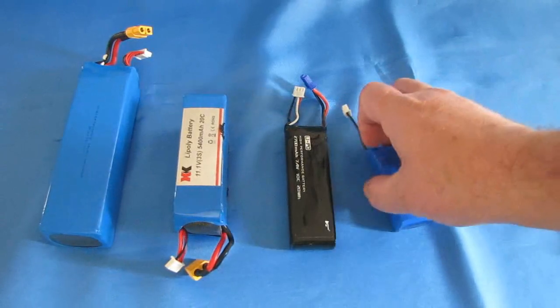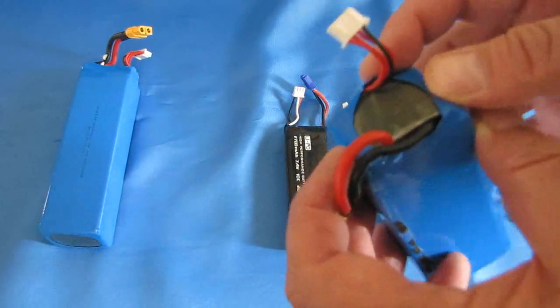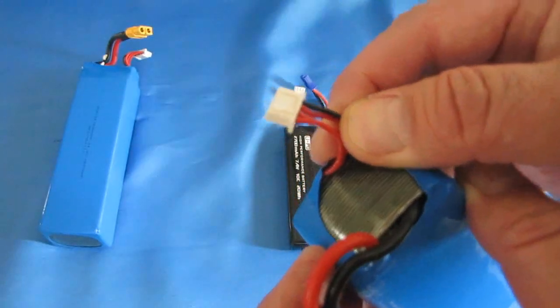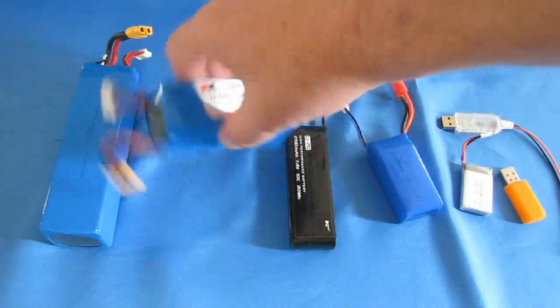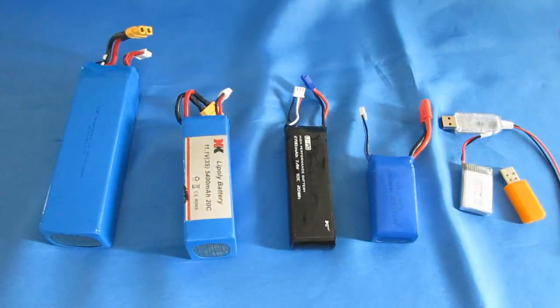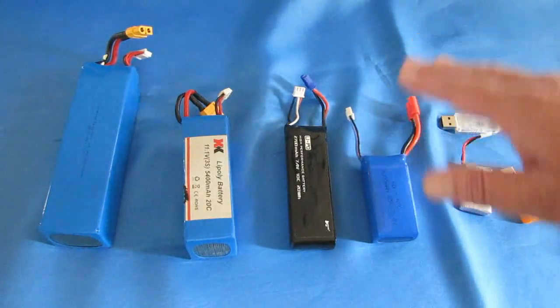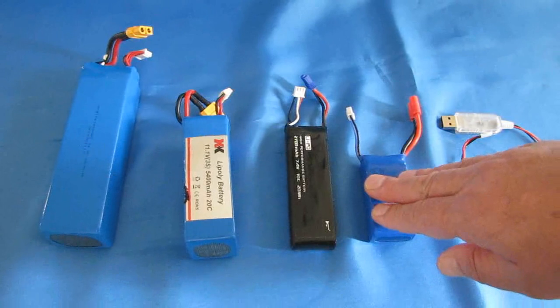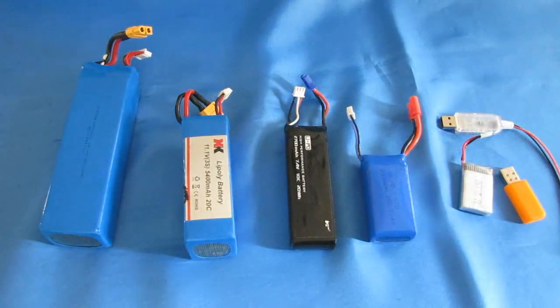A balance charger monitors the voltage of each cell through this balance charger plug. Notice there's multiple wires attached, so the charger monitors the voltage through each cell. If any cell gets higher than the others, they usually discharge that higher voltage cell to bring all cells to the same voltage before charging further. We'll discuss that when I bring in the chargers.